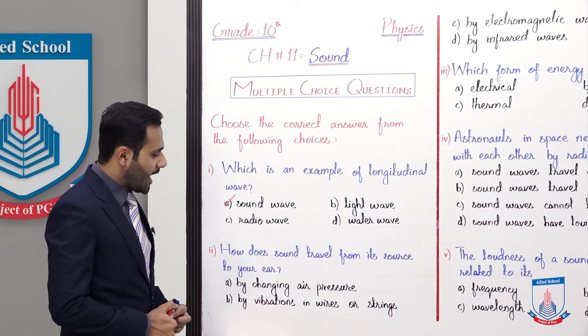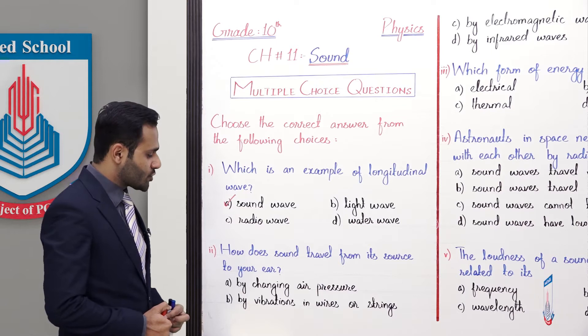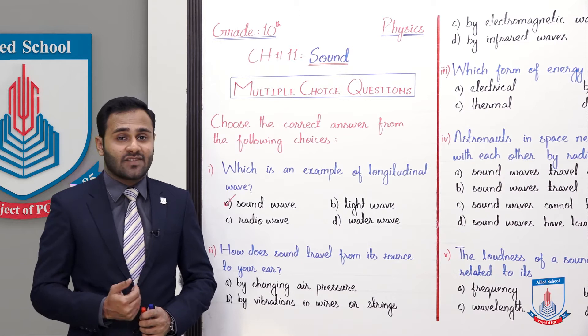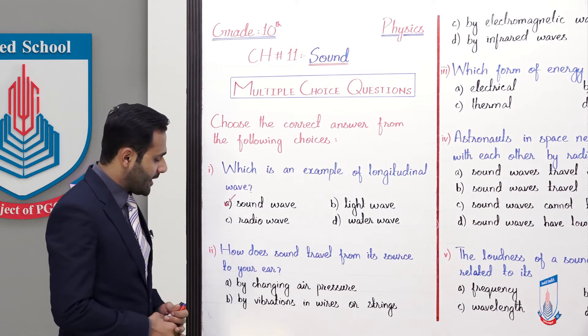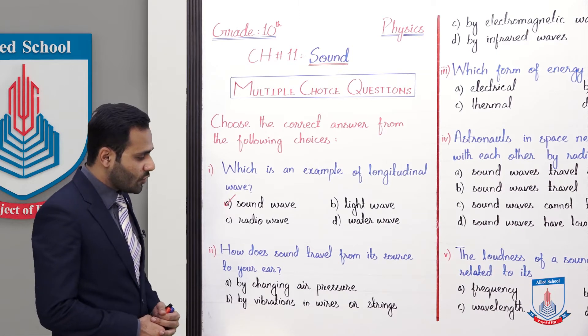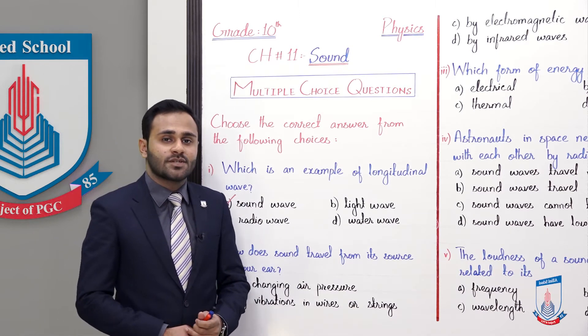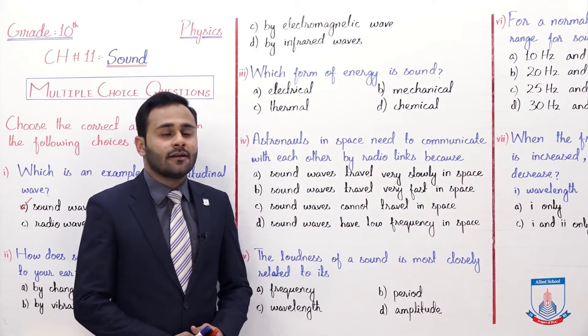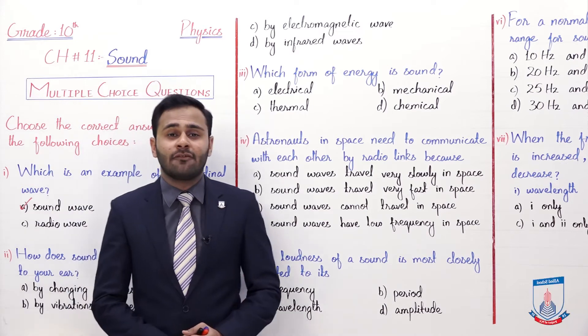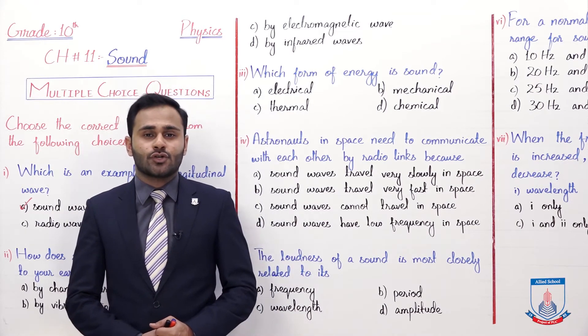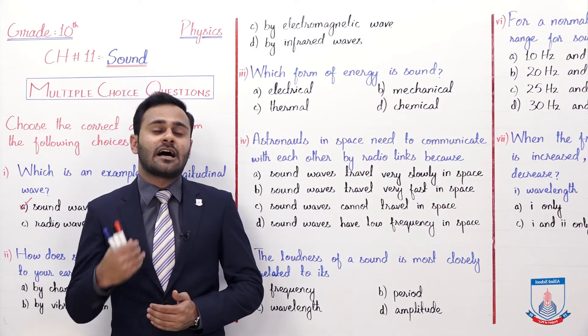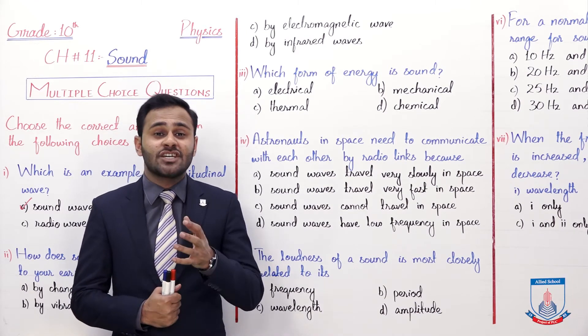Next MCQ. How does sound travel from its source to your ear? The sound travels from source to your ear in which way? Options are A by changing air pressure, B by vibrations in wires or strings, and the next option C by electromagnetic wave and D by infrared wave.